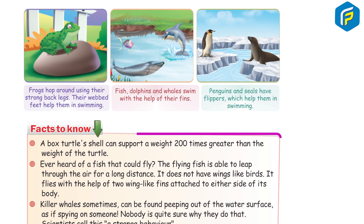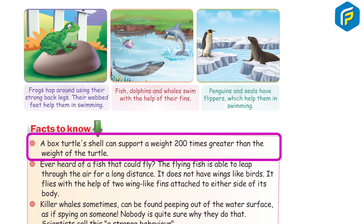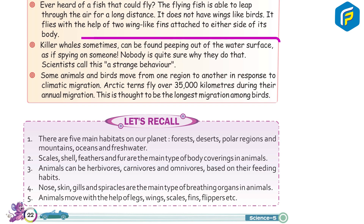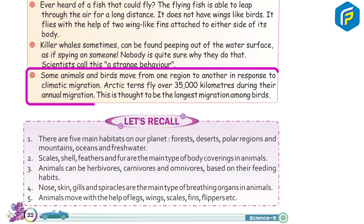Facts to know: A box turtle shell can support a weight 200 times greater than the weight of the turtle. The flying fish is able to leap through the air for a long distance — it does not have wings like birds but flies with the help of two wing-like fins attached to either side of its body. Killer whales are sometimes found peeping out of the water surface as if spying on someone; scientists call this strange behaviour spy-hopping. Some animals and birds move from one region to another in response to climatic changes — this is called migration. Arctic terns fly over 35,000 kilometers during their annual migration, the longest migration among birds.